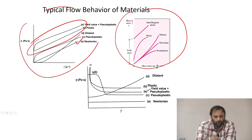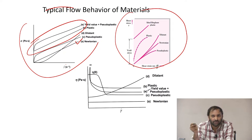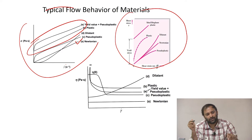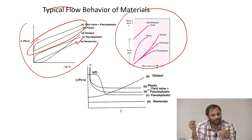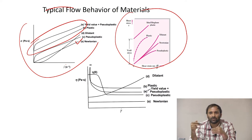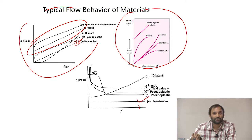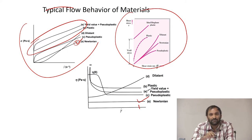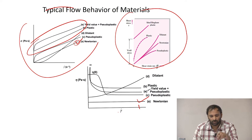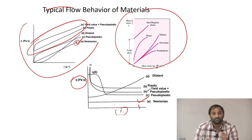The Newtonian fluid again shows a linear variation of stress versus shear rate. When looking at a stress versus shear rate plot, you can think of the slope at any point as giving the resistance, which corresponds to viscosity. For a Newtonian fluid, the slope is constant, so the viscosity is constant. For other types of fluids, viscosity can change as a function of shear rate.